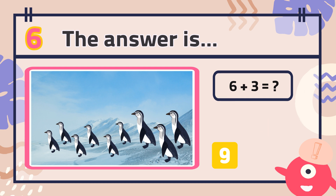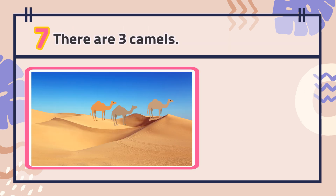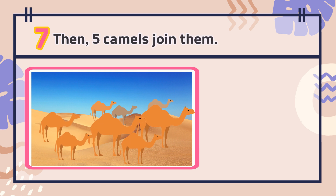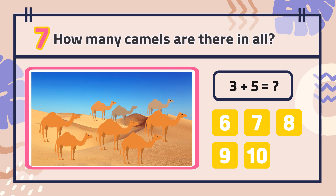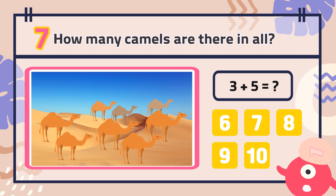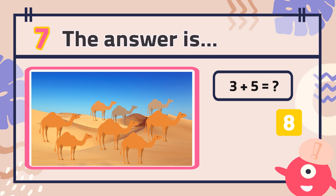Number 7: There are three camels. Then five camels join them. How many camels are there in all? The answer is...